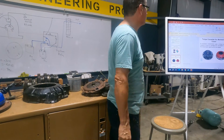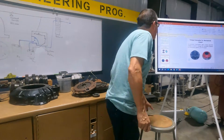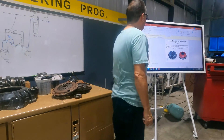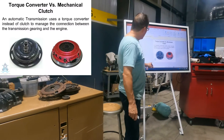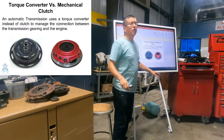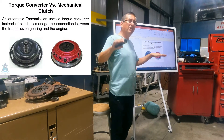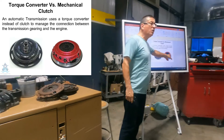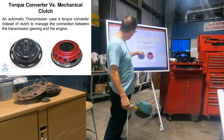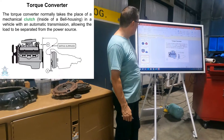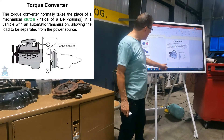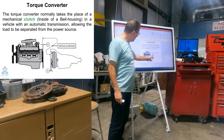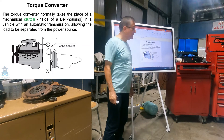Look at this — the torque converter versus the mechanical clutch, that's the comparison. This is the dry clutch and this is the wet clutch. The torque converter is located in the middle, in between the engine and the transmission.